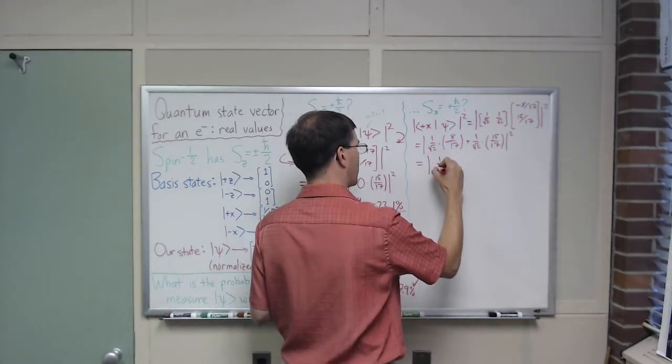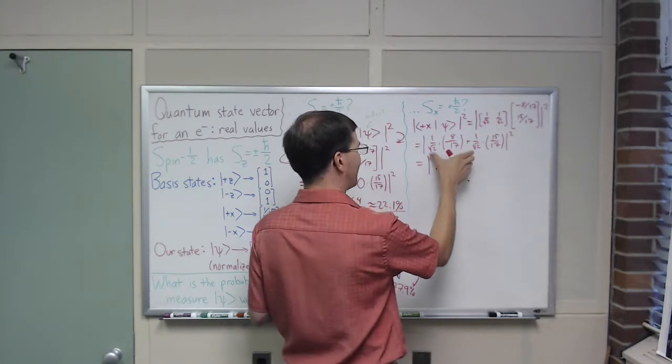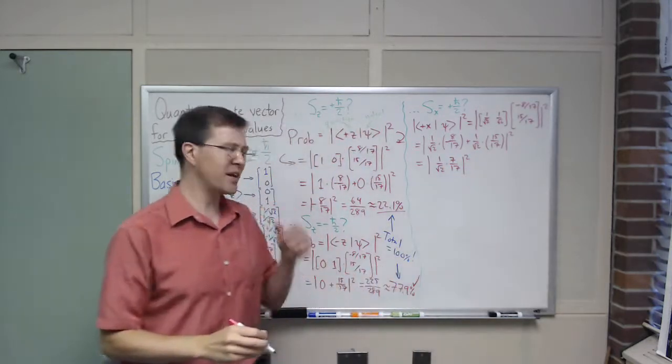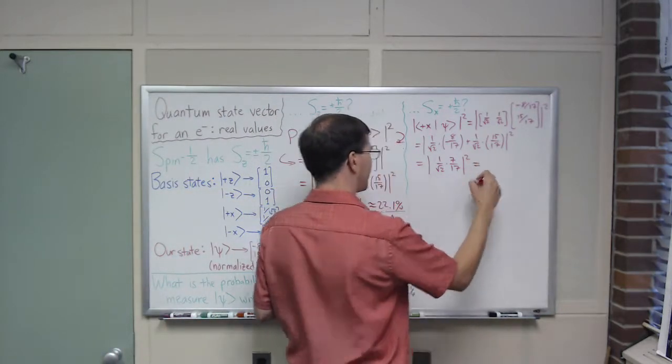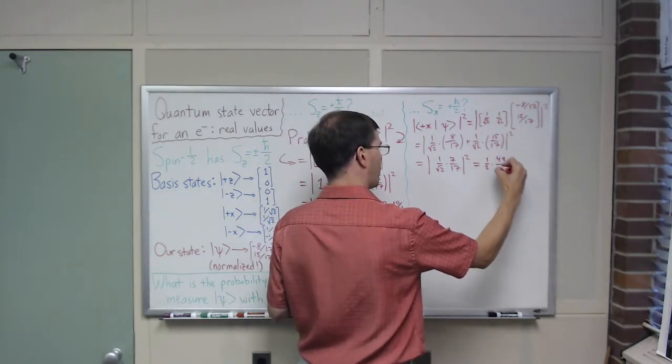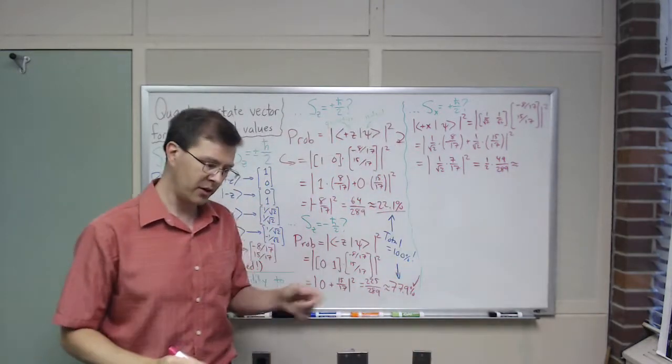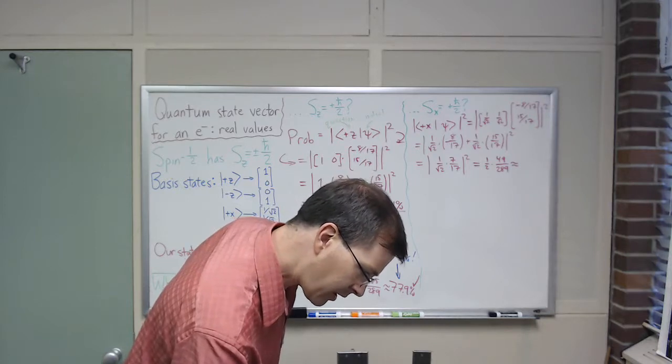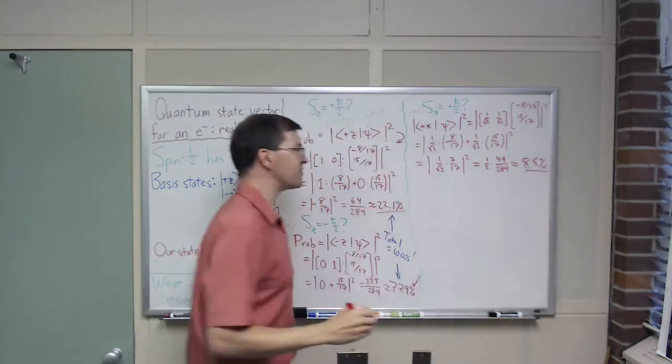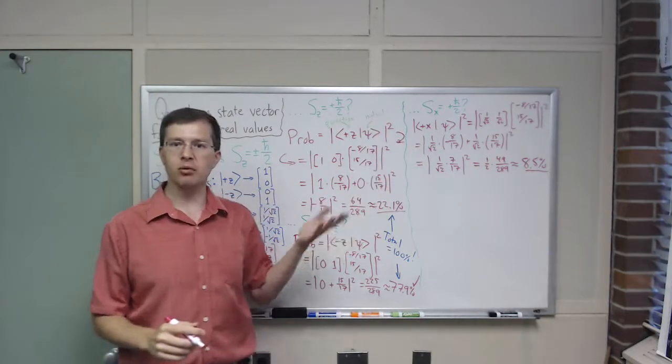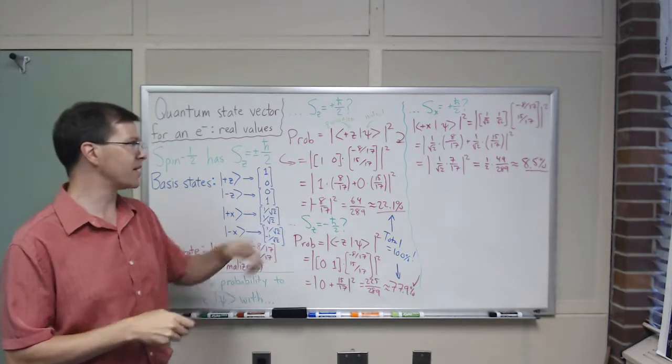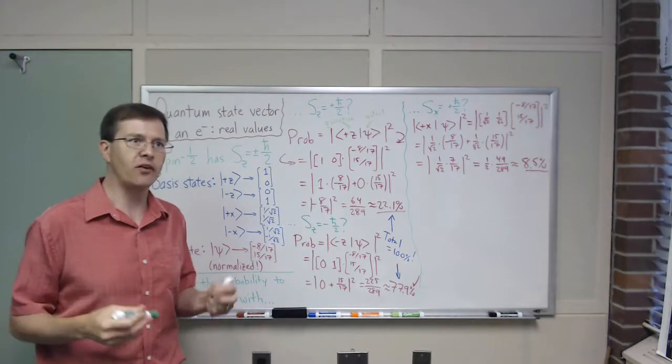It takes a while to write it all out. 1 over square root of 2 times minus 8 seventeenths plus 1 over square root of 2 times 15 seventeenths squared. I did this at some point. This is the absolute square of 1 over square root of 2, and if I factor this out, 15 minus 8 looks like 7 seventeenths. Squaring that, squaring 1 over square root of 2 is 1 half times 49 over 289. When I get that probability, I end up finding it is about 8.5 percent is all, so this is not very likely to be found in the plus x state.